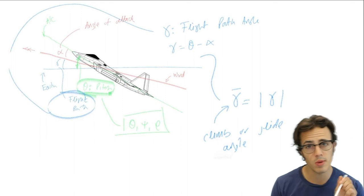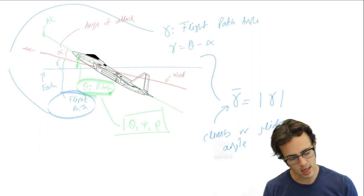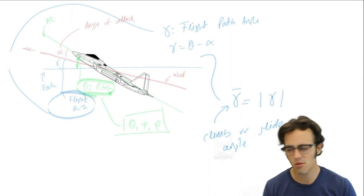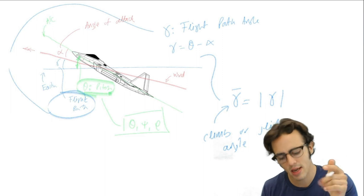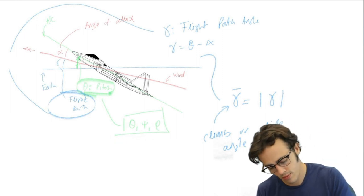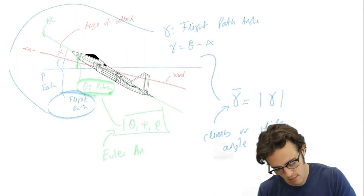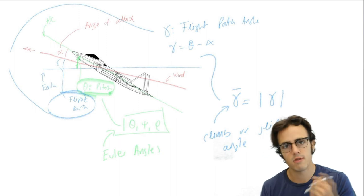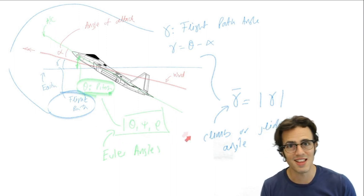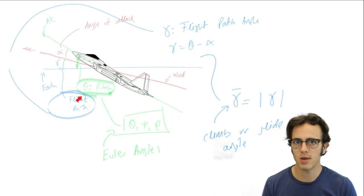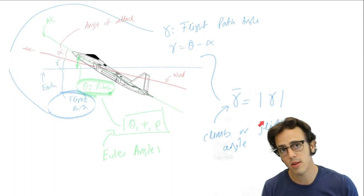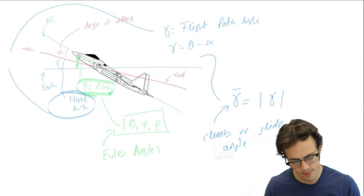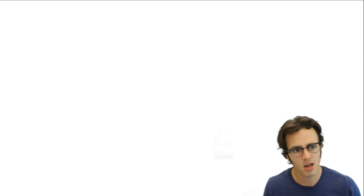In the PDF notes I used theta to describe the angles, and I realized that gets confusing when we move into flight mechanics and use theta as one of the Euler angles. My aircraft performance follows the Anderson textbook methodology, while for flight mechanics I use the approach taught to me as an undergraduate. Tom Yechout's book also uses theta for the glide angle. We're going to use gamma to represent our climb or glide angle, and the notes will be updated on the website so the nomenclature is consistent.